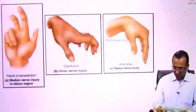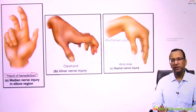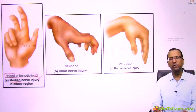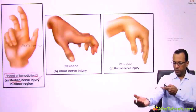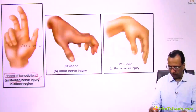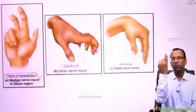If you are talking about the hand of benediction, it is the typical injury for the median nerve — usually a median nerve injury at a higher level. And if you are talking about ulnar nerve injury, then it is claw hand deformity, especially towards fingers 4 and 5, which are more involved.